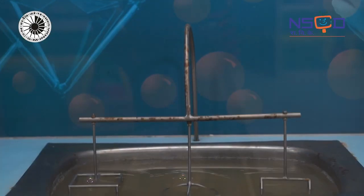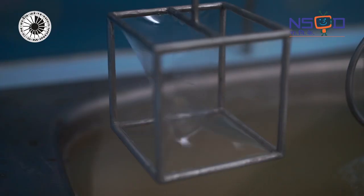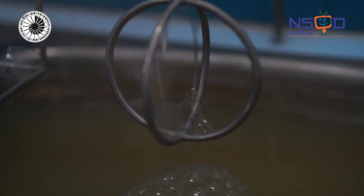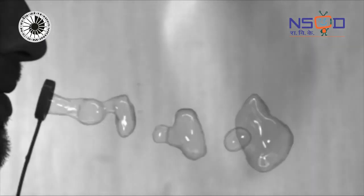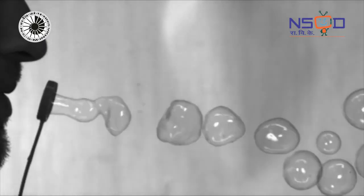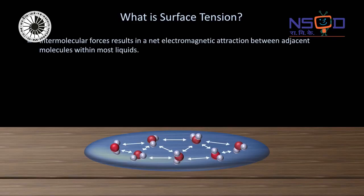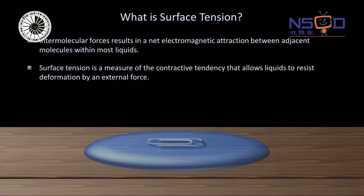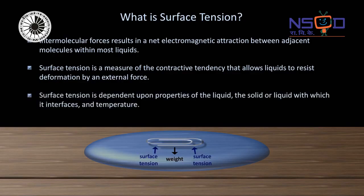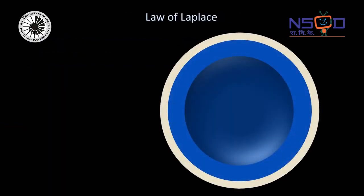Why does a thin film of soap have a shape preference? It's because of surface tension. It holds the liquid surface together like a tight cloth. Put simply, water molecules attract each other. This sets up surface tension which acts inwards against the pressure of the air inside that acts outwards.